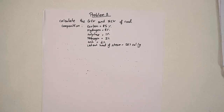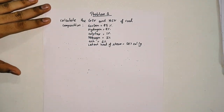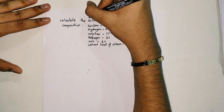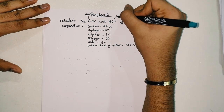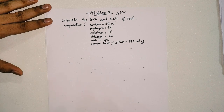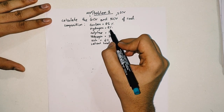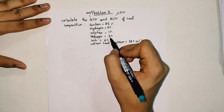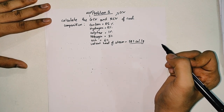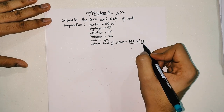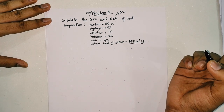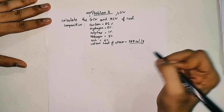Problem 1: Calculate the GCV and NCV of coal with the following composition — carbon 85%, hydrogen 8%, sulfur 1%, nitrogen 2%, ash 4%. The latent heat of steam is given as 587 cal/gram, but remember this value as it may not always be provided.